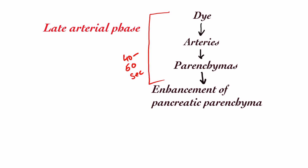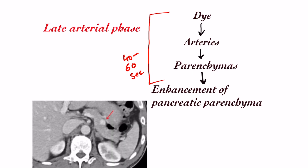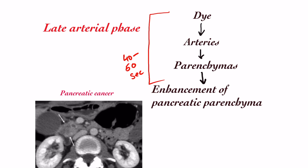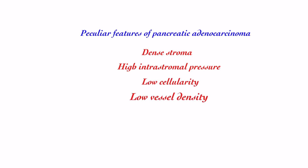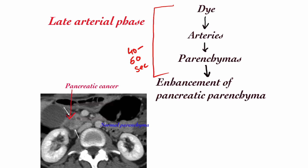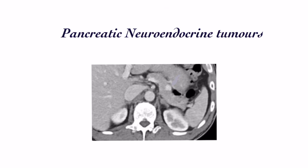Pancreatic parenchyma will enhance in the late arterial phase, taken 40 to 50 seconds after dye injection. Tumors are usually hypervascular and would concentrate more dye, appearing brighter than parenchyma. However, pancreatic cancer paradoxically appears hypodense on the arterial phase — that is, darker than the parenchyma. This is because of the peculiar histology of pancreatic adenocarcinoma: dense stroma with high stromal pressure and low cellularity and vessel density, leading to low enhancement. In contrast, pancreatic neuroendocrine tumors are hypervascular and appear bright on the arterial phase. This is how pancreatic adenocarcinoma and pancreatic neuroendocrine tumors such as insulinoma are differentiated on CT scan.